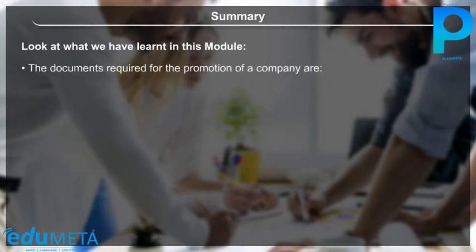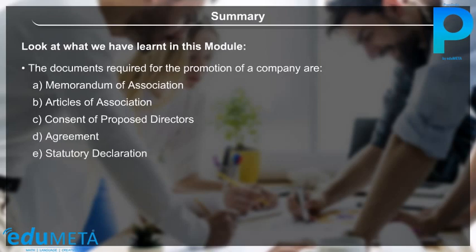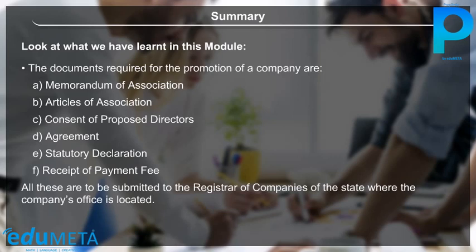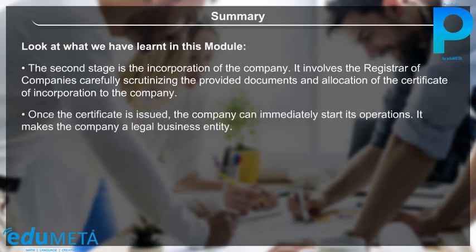The documents required for the promotion of a company are: A. Memorandum of Association, B. Articles of Association, C. Consent of proposed directors, D. Agreement, E. Statutory declaration, F. Receipt of payment fee. All these are to be submitted to the Registrar of Companies of the state where the company's office is located. The second stage is the incorporation of the company, which involves the Registrar carefully scrutinizing the documents and issuing the Certificate of Incorporation. Once the certificate is issued, the company can immediately start its operations and becomes a legal business entity.